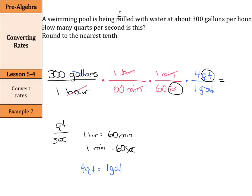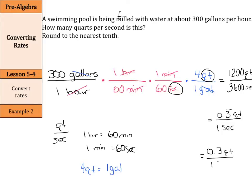So what I'm going to do is multiply the numbers on top: 300 times 1 times 1 times 4 is 1,200 quarts, over 1 times 60 times 60 times 1, which is 3,600 seconds. Now I need to get this into 1 second, so I take 1,200 and divide by 3,600. You get 0.3 repeating quarts in 1 second, and if we're rounding to the nearest tenth, that's just 0.3 quarts per second.